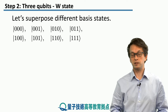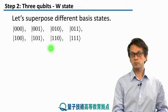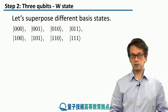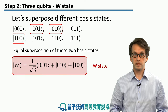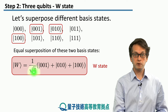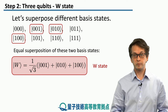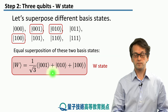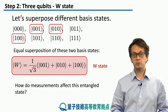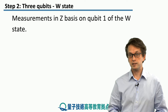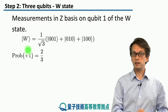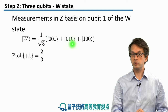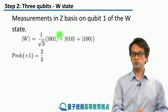Now let's move on to a different example known as a W state. Again, here are our eight possible basis states, and this time we will choose a different superposition — we consider three states and take an equal superposition of them. The normalization factor is one over square root of three, because we have three basis states in the superposition rather than two as in the GHZ state. This is known as the W state. Measuring in the Z basis on qubit 1, with probability two thirds we get the outcome plus one, because we have two contributing terms in the superposition.